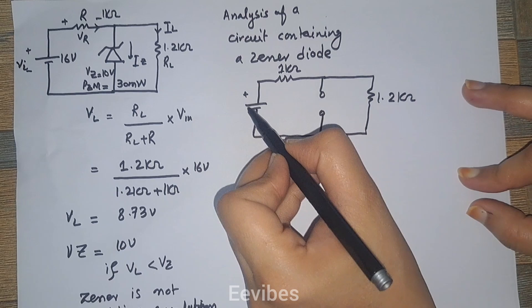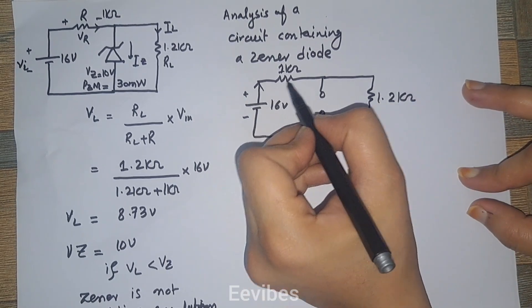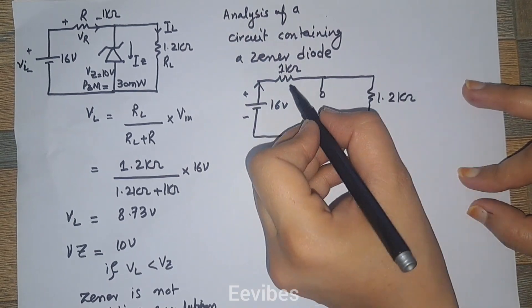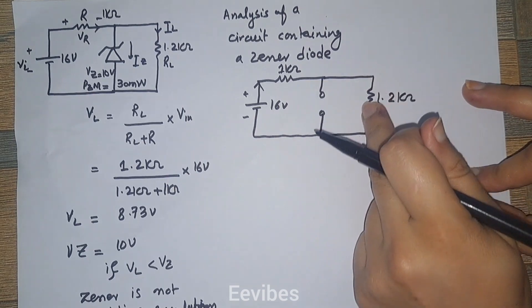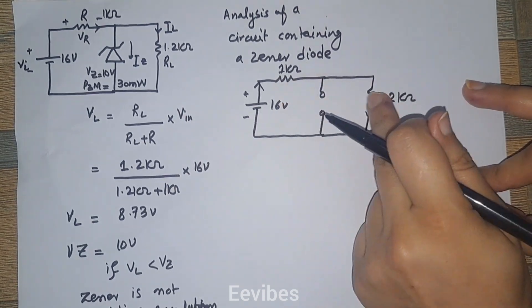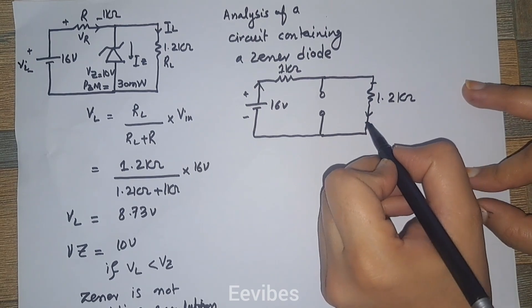Vin equals 16 volts. Now the input current that is actually flowing will be the same through these two resistances because they both are connected in series.